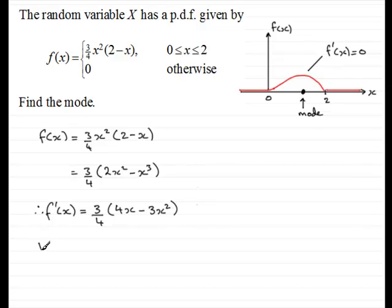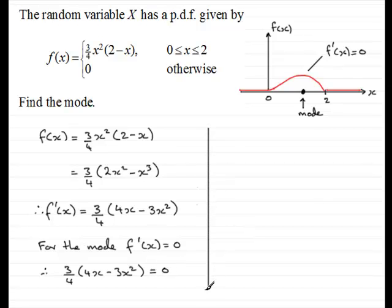So for the mode, let's just put that down. For the mode, f dash x equals 0. So therefore we've got three quarters of 4x minus 3x squared equals 0.